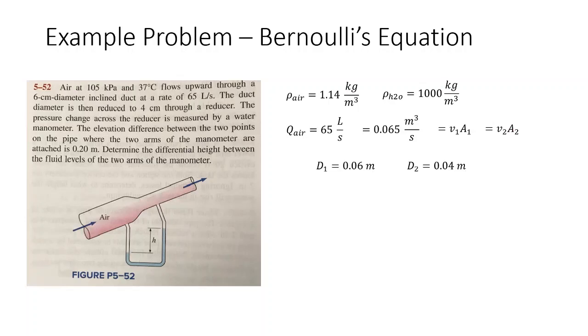We have our two diameters: diameter one is 0.06 meters, diameter two is 0.04 meters. Again, we've converted from centimeters to meters here. We're going to use our equation for cross-sectional area where A equals pi over 4 d squared. So we run that calculation and we get these two areas here.